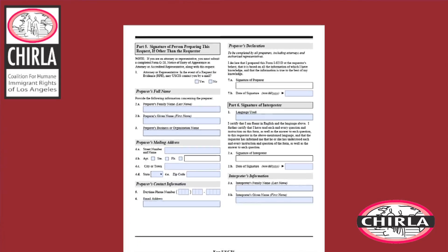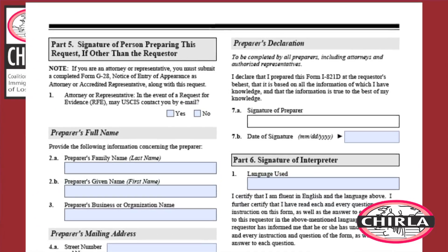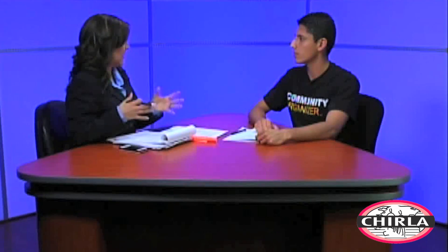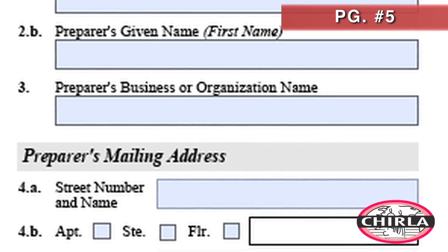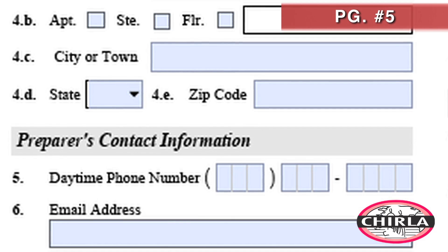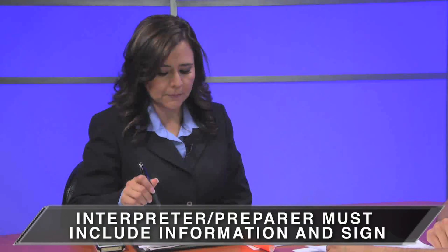Now, page five: a lot of people are going to community organizations or attorneys to help fill out this application. The person preparing this information on behalf of the applicant must include their information on page five. Question seven requires them to sign and date it. If they're using an interpreter, that interpreter has to include their information as well.